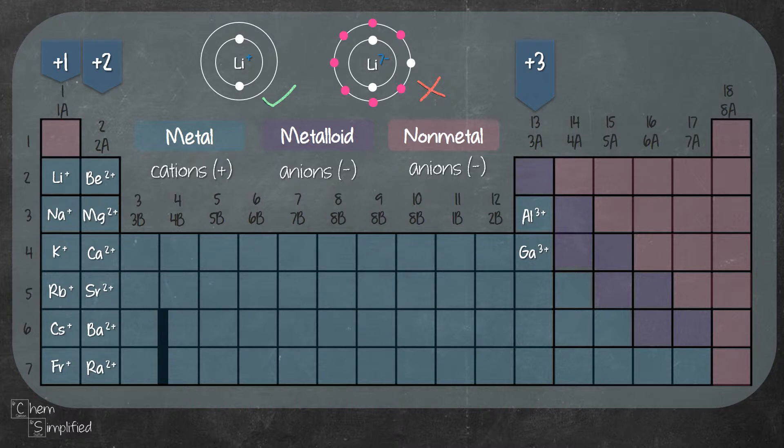For non-metals, instead of giving away electrons, it's actually easier for them to accept electrons. Let's take group 5A for example. Group 5A elements will need to accept 3 electrons in order to become octet because they already have 5, so in order to become 8, all they have to do is take in 3.